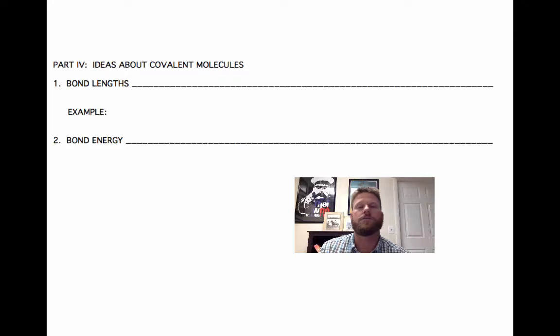Let's consider some characteristics of covalent molecules. First of all, bond lengths. Three different types of covalent bonds: we have single bonds, double bonds, and triple bonds.